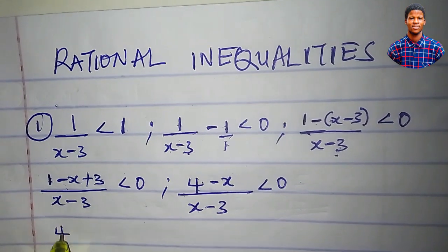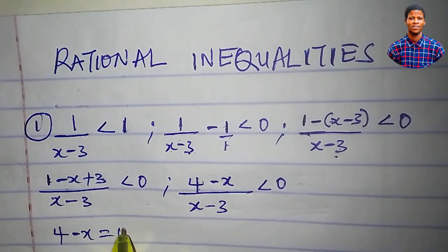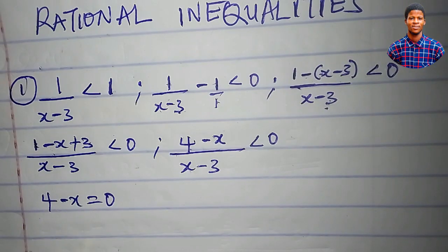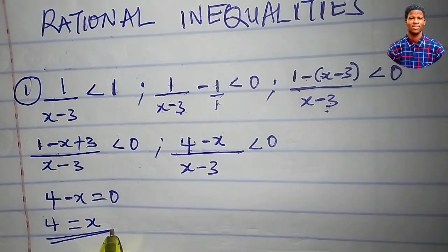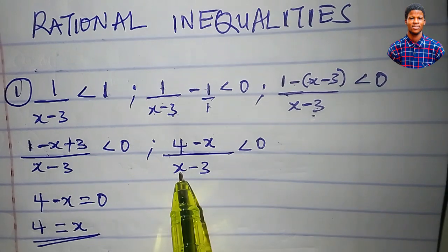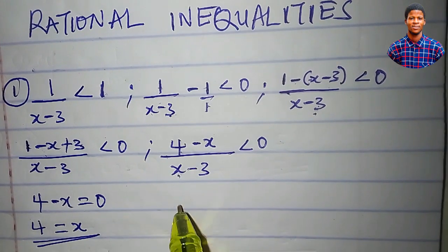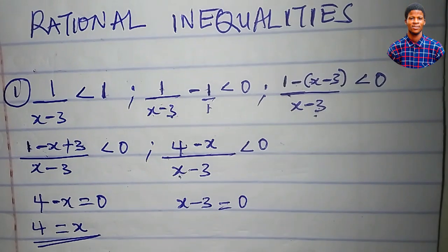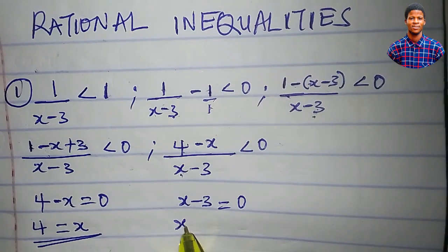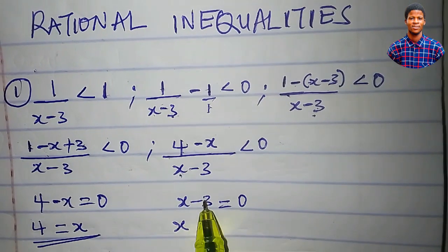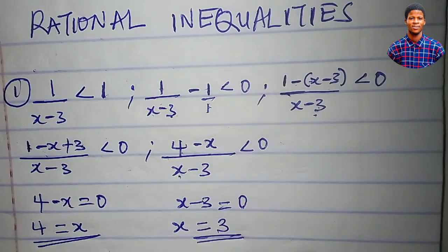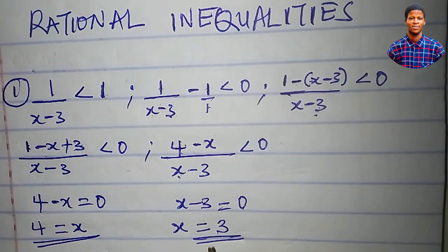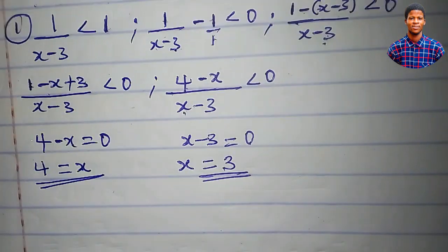I want to set 4 minus x to 0. Making x the subject of the formula, we'll have x is equal to 4. Now let's set x minus 3 to 0. Making x the subject of the formula, x will be equal to 3. So we have x equal to 4 and x equal to 3. These two points will be the points on our number line.